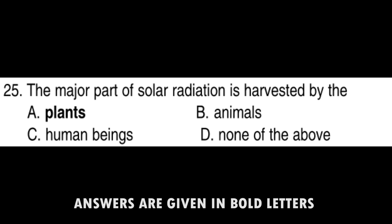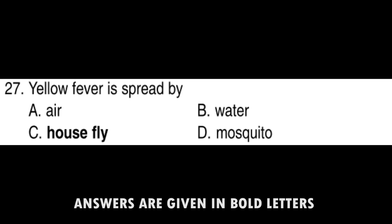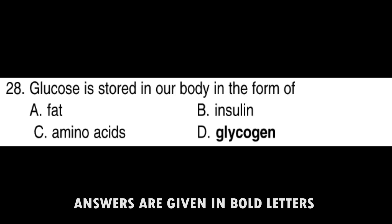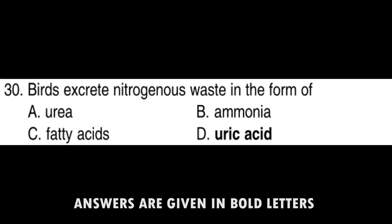Azadirachta indica is the botanical name of Neem. The major part of solar radiation is harvested by Plants. The largest living animal belongs to the group of Mammals. Yellow fever is spread by Housefly. Glucose is stored in our body in the form of Glycogen. RH factor is present in Blood.